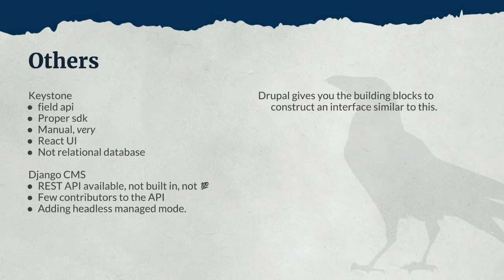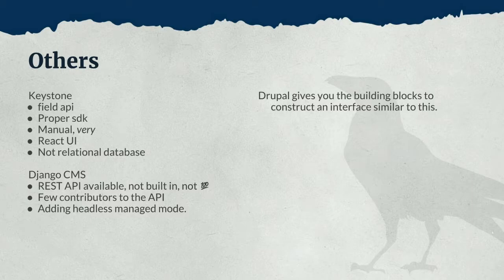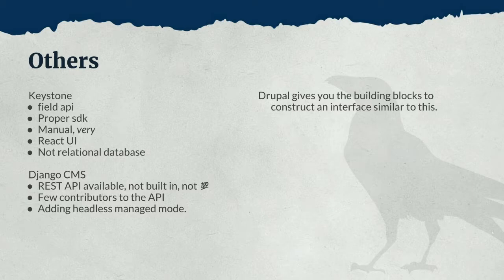A new one that's come out in the last year or so is called KeystoneJS. It has a field API very similar to Drupal. It's a node module, so you can require it in your application as if it were just any other package. However, it is quite manual to set up — their getting started page is like copy and paste all this code and create all these directories. That is tougher to get started with than Drupal, but it allows quite a lot more flexibility. Based on their field API, they can auto-generate React components to create admin forms. Unfortunately, they don't have any kind of relational database, and I haven't tried it in production for managing really large interconnected sites of content.